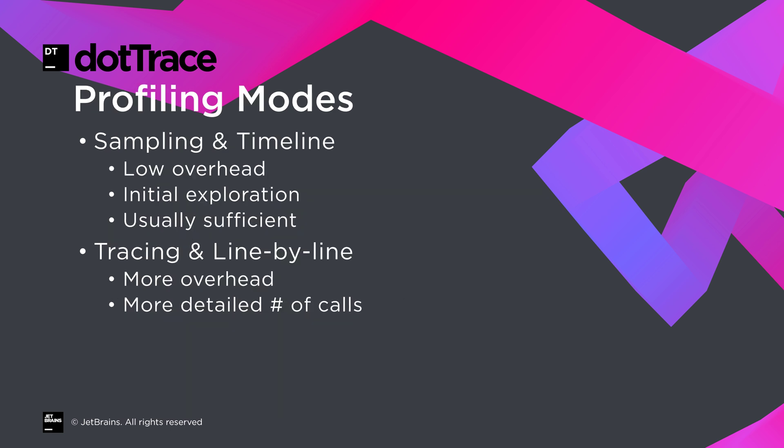To summarize, sampling and timeline profiling are great as they have low overhead. They are good for an initial exploration into how an application behaves and are usually sufficient for tracking down most performance problems. Timeline mode is similar to sampling but comes with the added benefit of being able to look at how our code interacts with its environment. Tracing and line by line are useful for having a deeper look at just our own code and how it is performing — more accurate in measuring the number of calls for a specific method, but also introducing more overhead in the profiler.